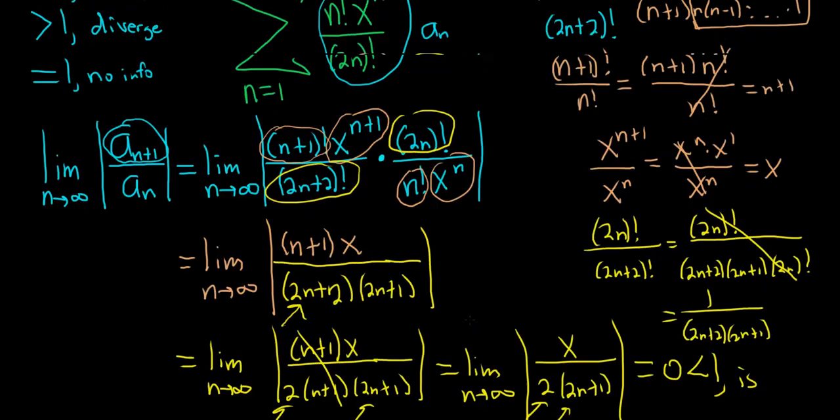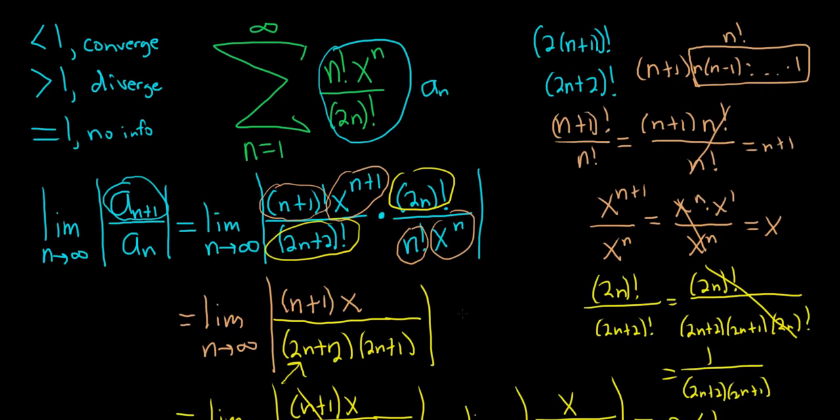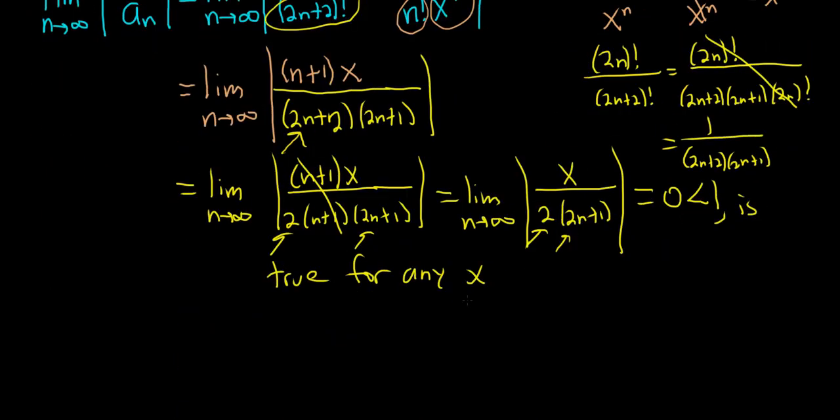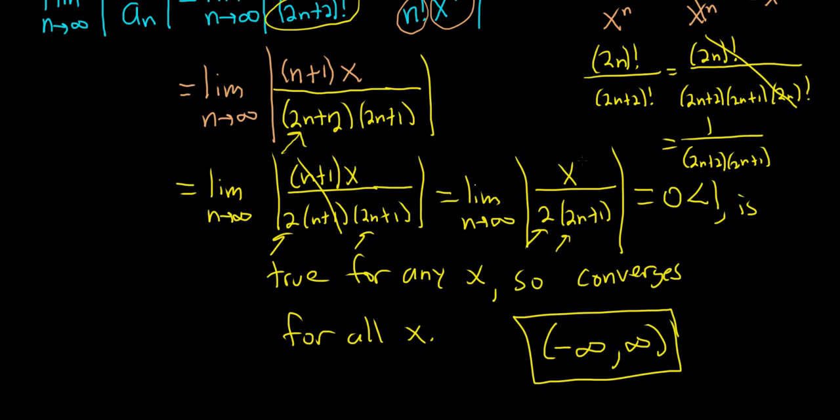It's true for any x, so this converges for all x, for every single value of x. The interval of convergence is all real numbers, or negative infinity to infinity. That's the final answer. No matter what x is, this result will always be less than 1 because this limit is always 0.